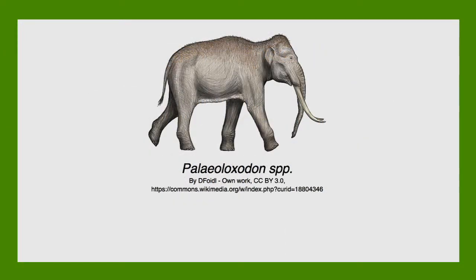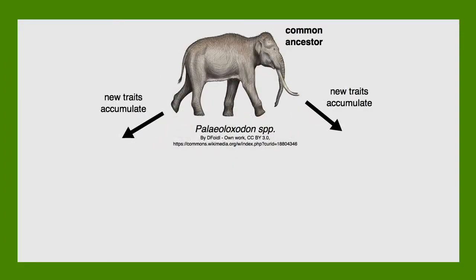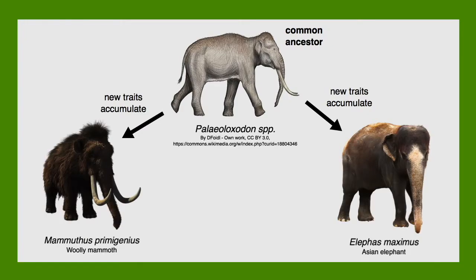The key point is, if two populations become reproductively isolated and occupy different ecological niches, they can accumulate new traits over time and become more and more different from each other. Given enough time, the differences between populations can be so big that they become entirely new species. This is divergent evolution.